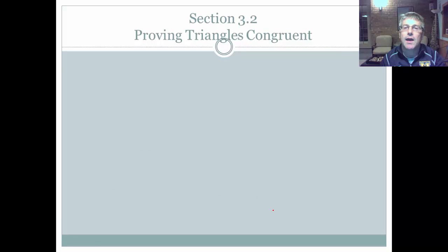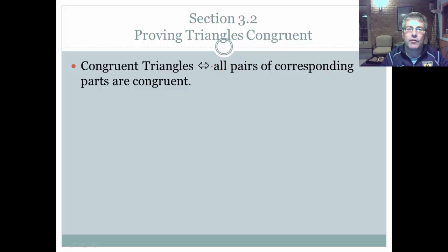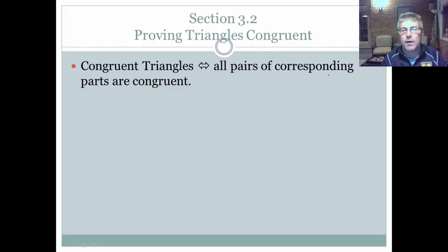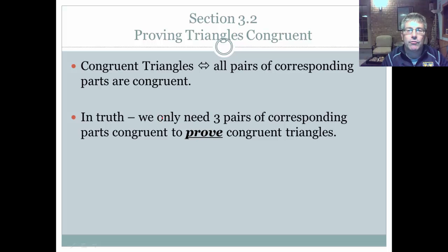On to section 3.2 and proving triangles congruent. We said earlier that congruent triangles imply all the pairs of corresponding parts are congruent — and this is reversible. If all the pairs of corresponding parts are congruent, then we have congruent triangles. But in truth, we only need three pairs of corresponding parts congruent to prove the triangles congruent, and we're going to start with these three methods.